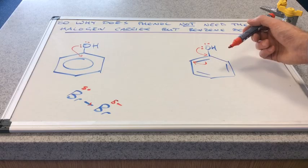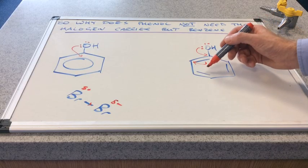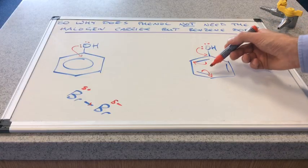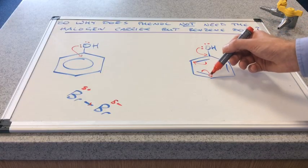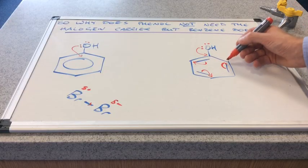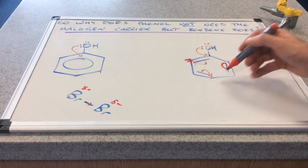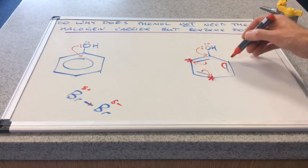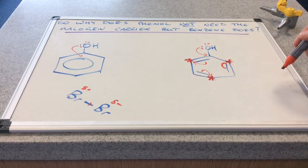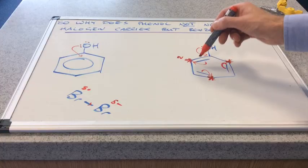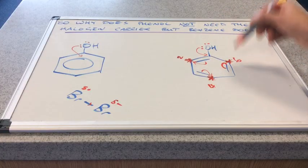And the knock-on effect of that is it will repel these electrons here onto this position. And because there's electron density getting closer to this, it will repel those onto there. And so you get this activation of the electron density at these positions here. What positions is that? That's one. We'll count around this way. Two, three, four, five, six.